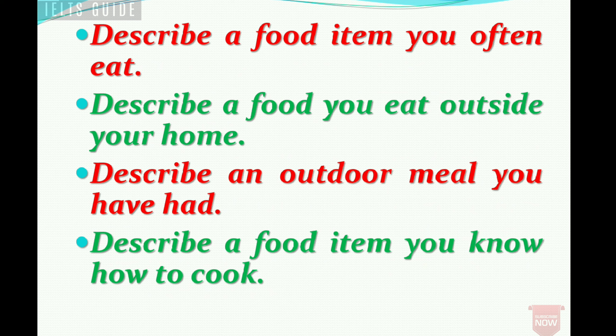Here are more cue cards similar to this one — if you know the answer to today's cue card, you can easily answer these four as well: 'Describe a food item you often eat,' 'Describe a food you eat outside your home,' 'Describe an outdoor meal you have had,' and 'Describe a food item you know how to cook.' If you prepare well for this answer, you can handle all five cue cards in total.